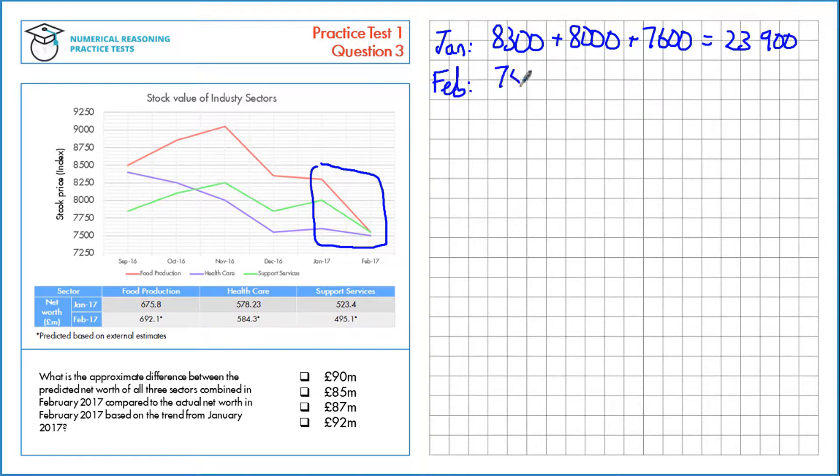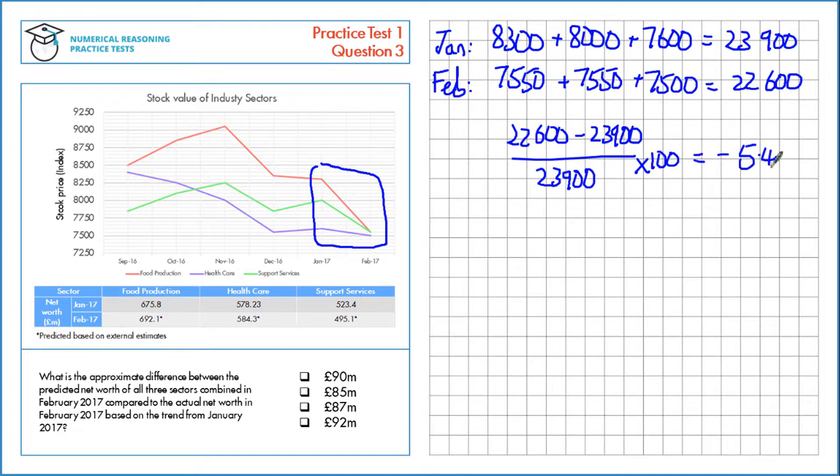For February, $7,550 plus the same again plus $7,500 is $22,600. The percentage change between the two months is $22,600 minus the old value divided by the old value, multiplied by 100, which equals minus 5.4%, or a 5.4% decrease.